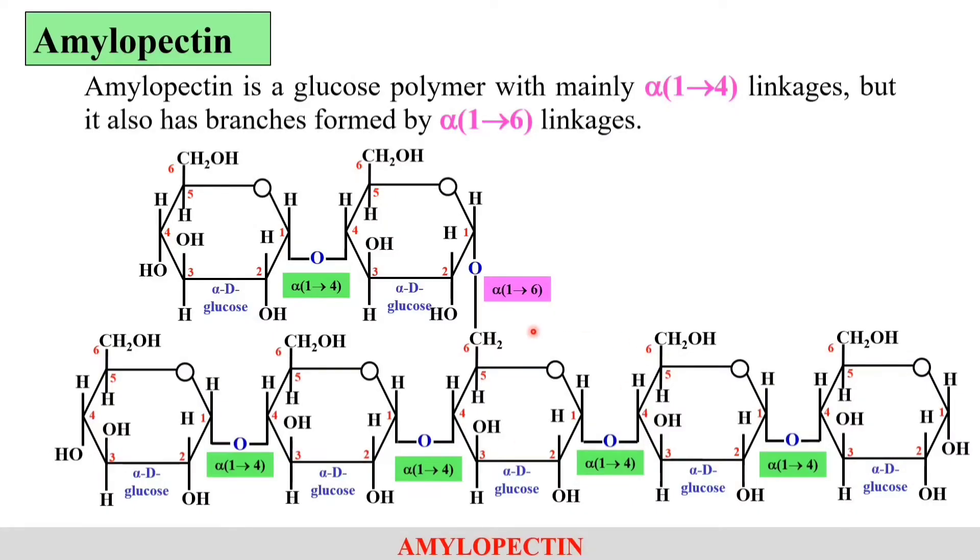As you clearly see, now this chain of alpha-1,4 linked glucose molecules attaches with this below chain of glucose molecules with the linkage that is alpha-1,6. So, you can clearly see, in case of amylopectin, there are two kinds of linkages: one is alpha-1,4 and second is alpha-1,6. So, starch is formed of these two, amylose and amylopectin.